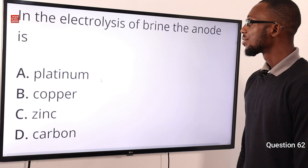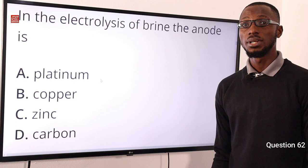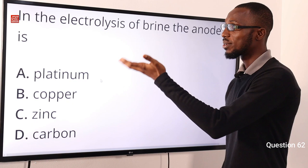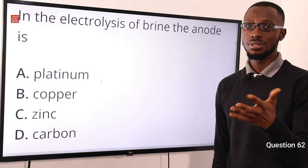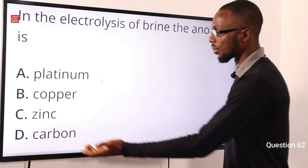Question 62: In the electrolysis of brine, the anode consists of a series of graphite — carbon rods. This electrolysis yields hydrogen and chlorine at the electrodes, as well as a solution of sodium hydroxide. The correct option is option D for carbon, specifically the graphite rod.